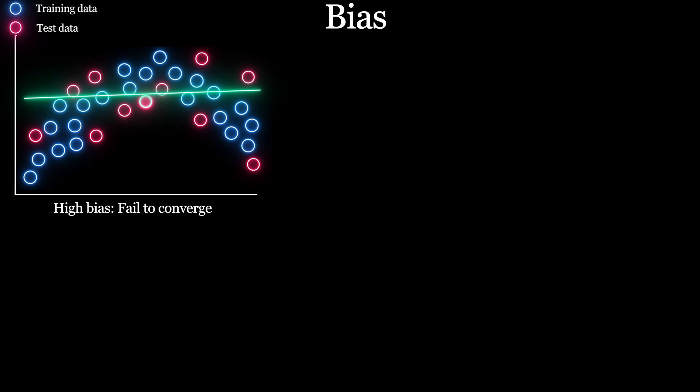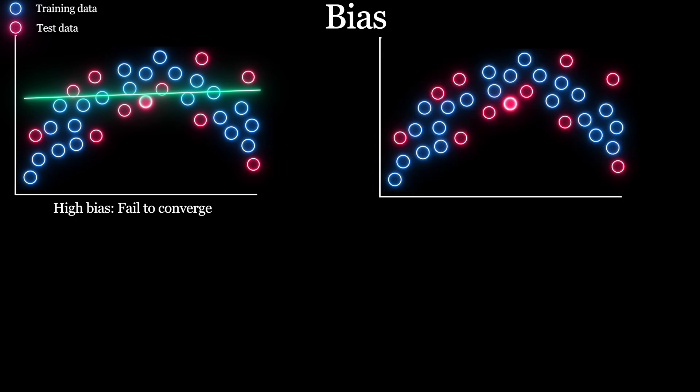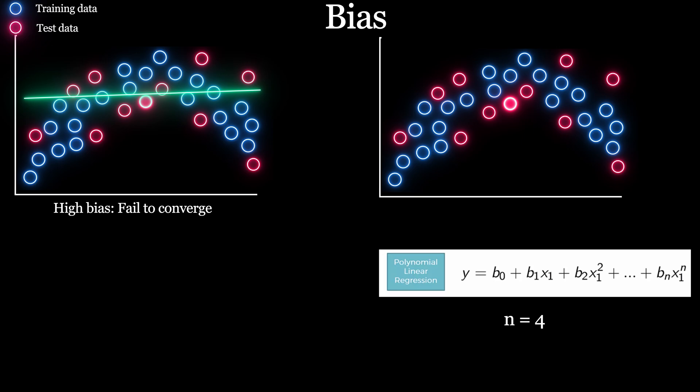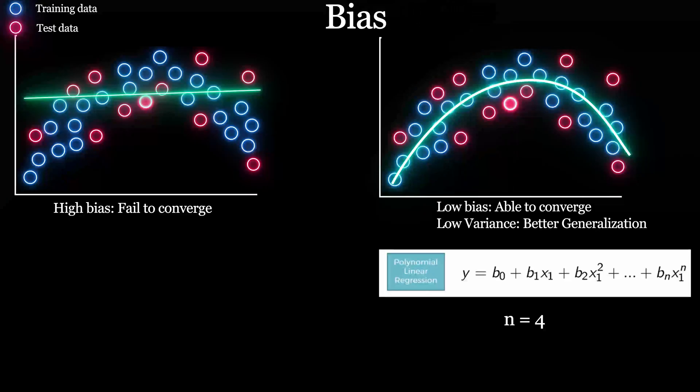Whereas a model with low bias has little assumption and is able to capture patterns from training data. For example, you can use polynomial regression model by choosing an appropriate degree of polynomial to create the best fit line. But what if you choose the degree of polynomial too high, like 9 in this case?